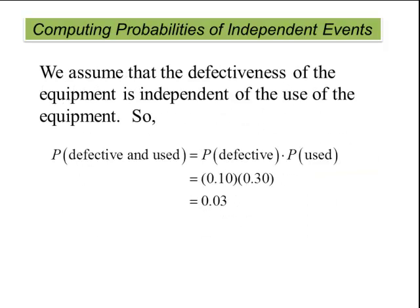So we assume that the defectiveness of the equipment is independent of the use of the equipment. The probability that it is defective and also used within the first year is equal to the probability that it is defective times the probability that it is used. Probability that it is defective is 10%, probability that it is used is 30%, so 10% times 30% is 3%.